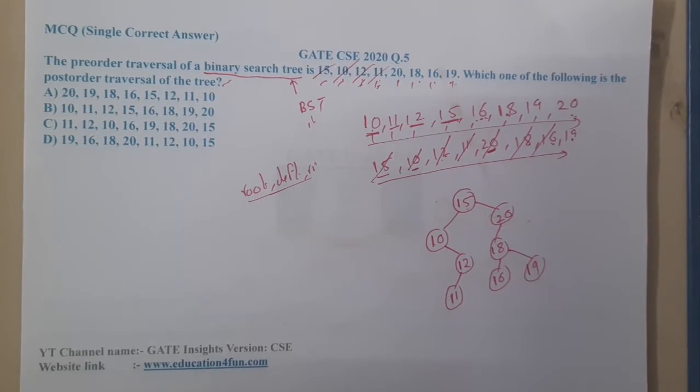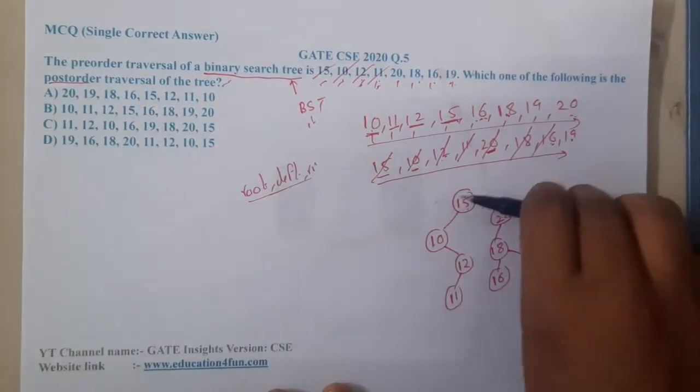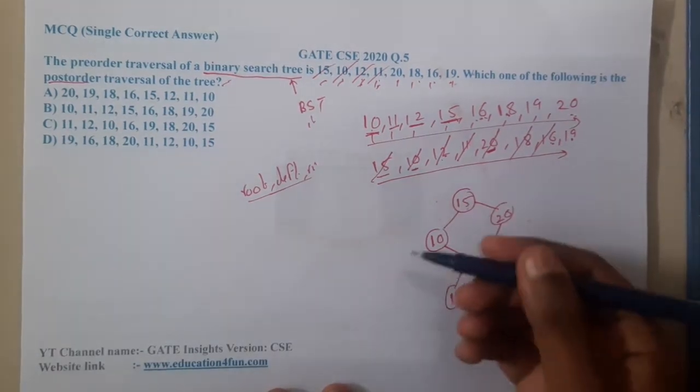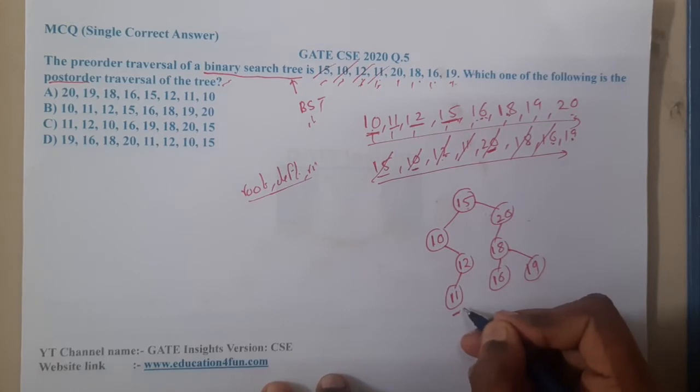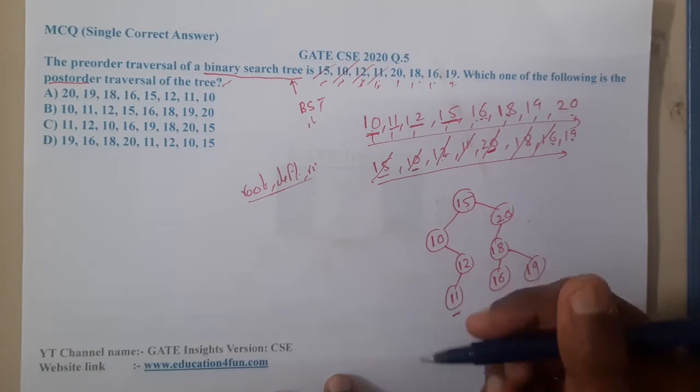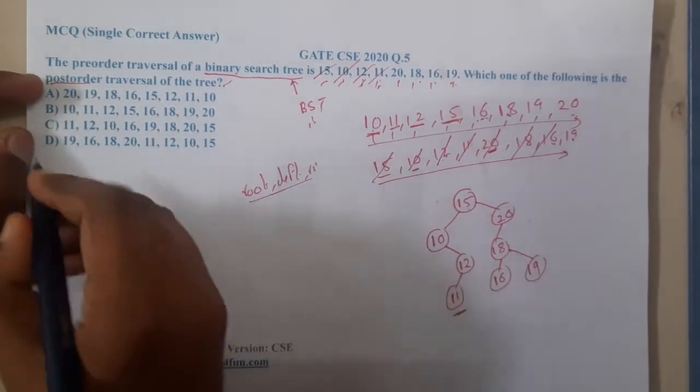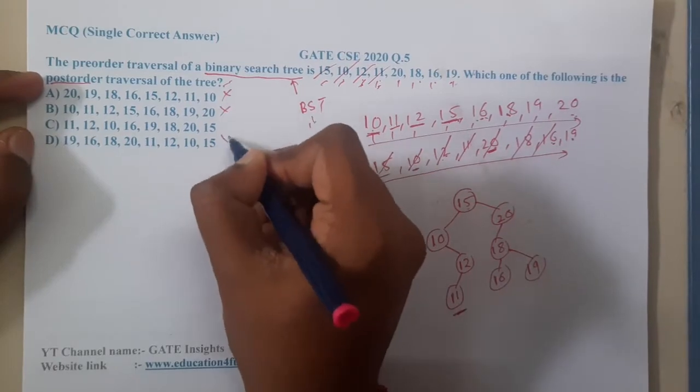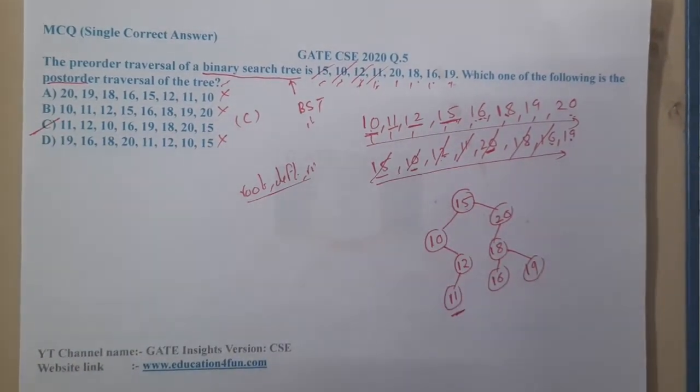Now we need to find the postorder. You start traversing. Where will you point first? You will start at 11. With that first option, we will be eliminating options A, B, and D. So option C will be the correct answer.